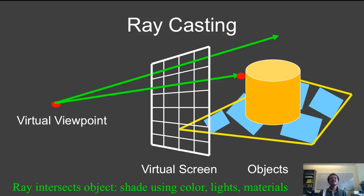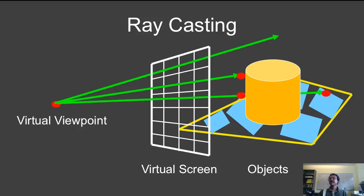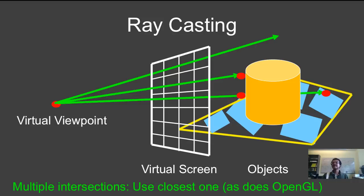For now, assume it's shaded exactly the same way as in homework 2, as is done in OpenGL. Consider the next ray — in this case there are two hit points: it first hits the cylinder and then the ground. For multiple intersections, you use the closest one to the camera, as does the z-buffer algorithm in OpenGL, and you shade it accordingly. So far, the images produced will be exactly the same as with a rasterizer in OpenGL. However, the algorithm is conceptually different because it goes to each pixel, shoots a ray, and finds the closest object, rather than rasterizing objects and maintaining a z-buffer for each pixel.